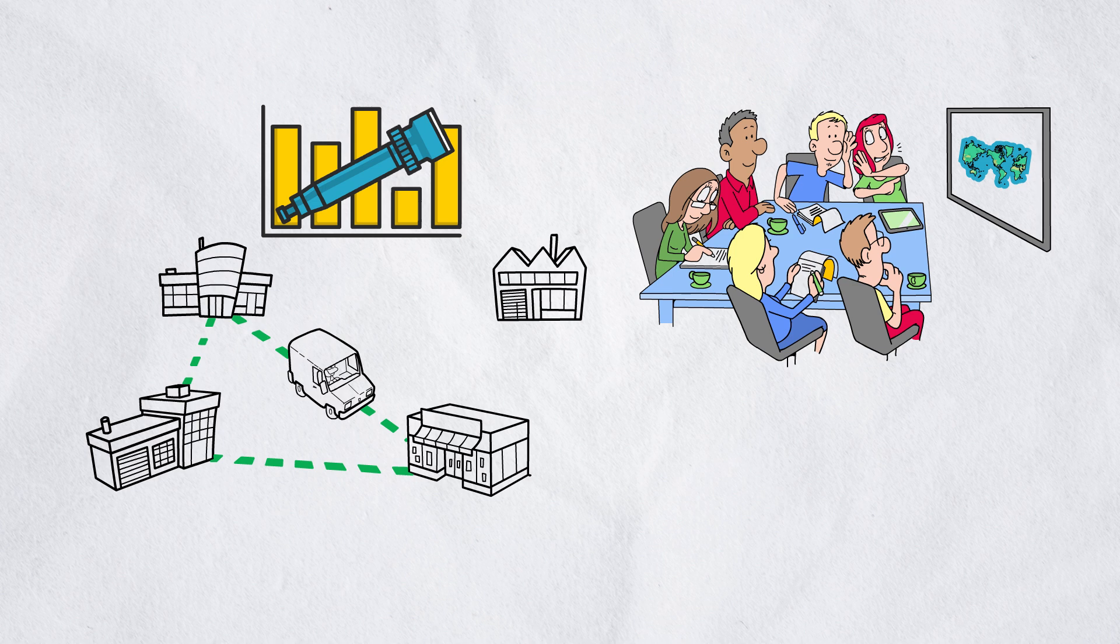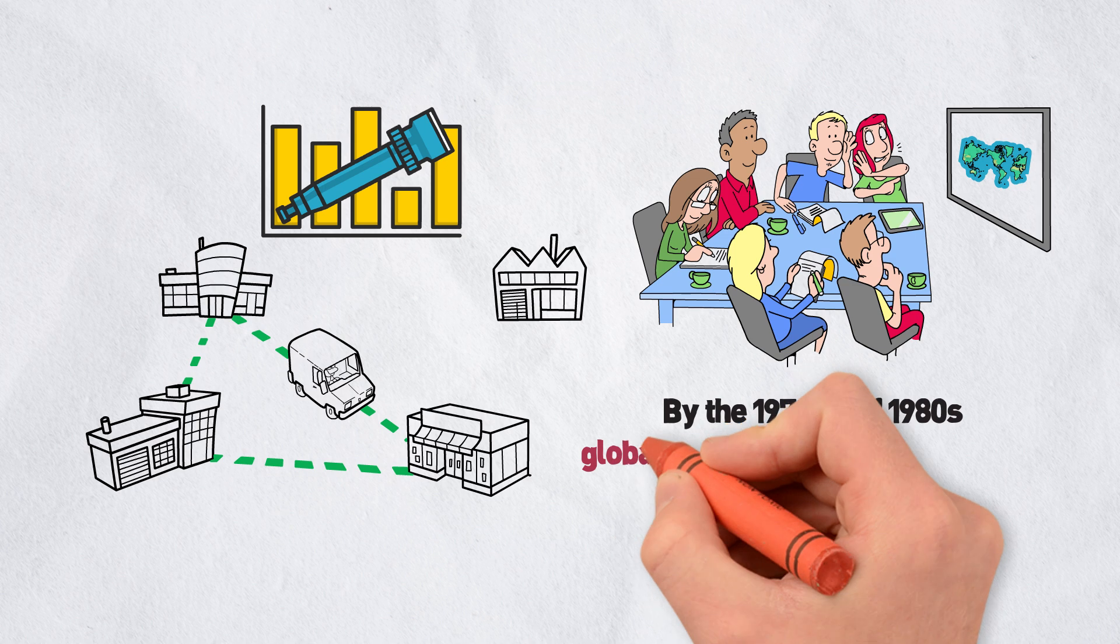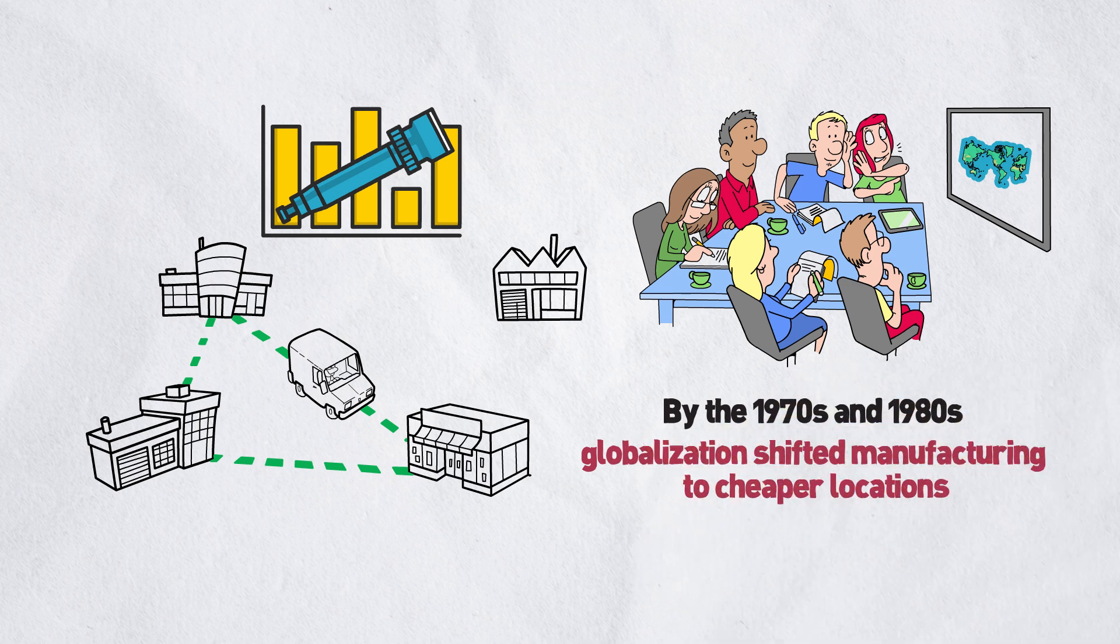Initially, a few vertically integrated companies handled everything from design to manufacturing. By the 70s and 80s, globalization shifted manufacturing to cheaper locations, leading to a more distributed production model.